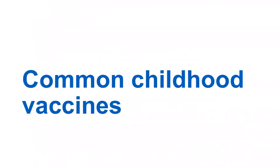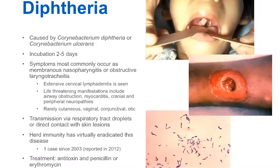We're going to start off by talking about some of the common childhood vaccines. We'll talk first about diphtheria. Diphtheria is a toxin-mediated disease. It's caused by Corynebacterium diphtheriae or ulcerans, which, as the bottom photo shows, is an aerobic gram-positive bacillus.